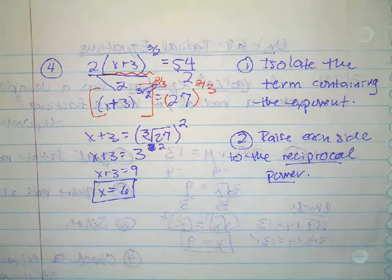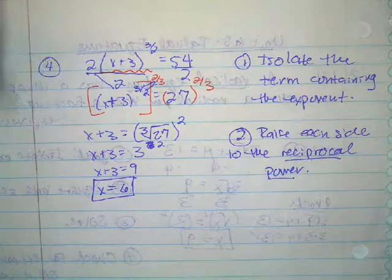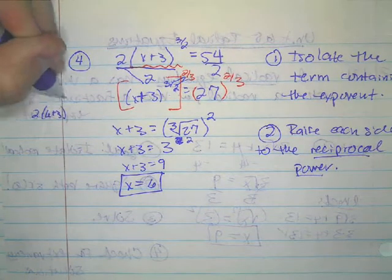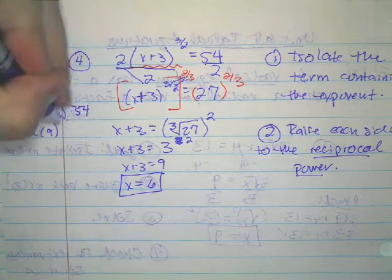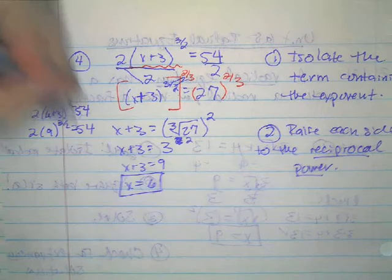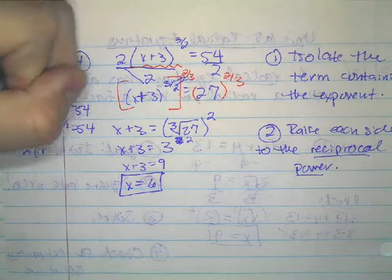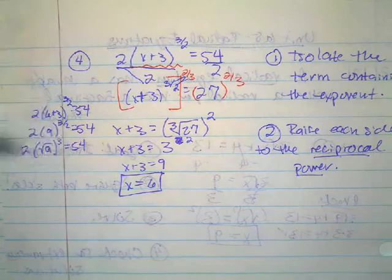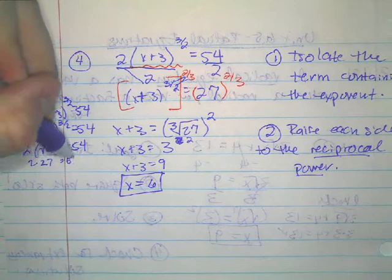Let's check x equals 6: 2 times 6 plus 3, which is 9, to the 3 halves power should equal 54. That means 2 times 9 to the 3 halves, which is 2 times the square root of 9 to the third power. The square root of 9 is 3, and 3 to the third power is 27, so 2 times 27 is 54. It works out.